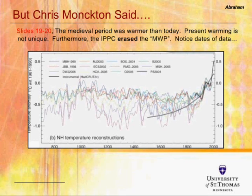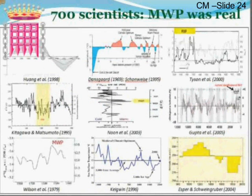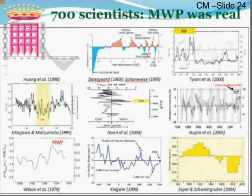We know temperatures were warmer in the Medieval Warm Period, but there's a lot of uncertainty, and they probably weren't as warm as today. All these papers also appeared after 1990, so Monckton's claim that the IPCC 'erased' the Medieval Warm Period is incorrect — the curve was redrawn based on new information unavailable in 1990. Monckton also cites 700 scientists who claim the Medieval Warm Period was real, global, and warmer than today, showing nine researchers' images as representative. Let's investigate a few of them.